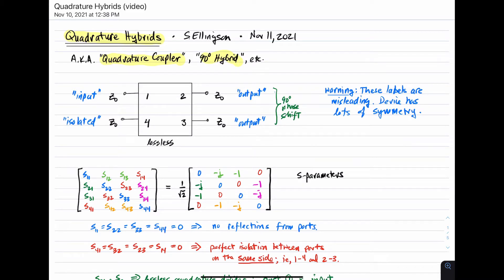The idea in a quadrature hybrid is that you have a four-port device with the ports labeled in a particular way here: one, two, three, four, going clockwise around this device. For the purpose of this video, we'll consider it to be lossless just to simplify the analysis, and this is often a reasonable approximation.